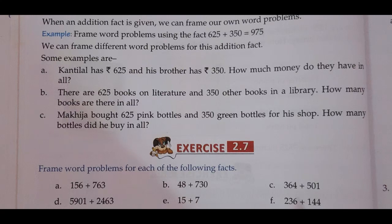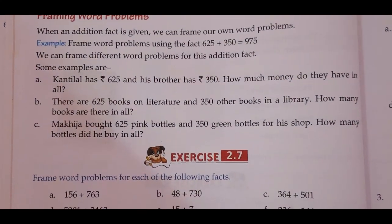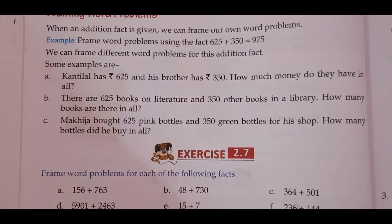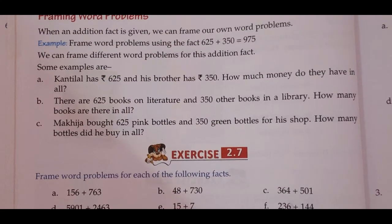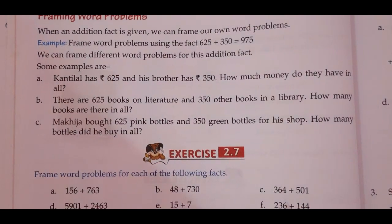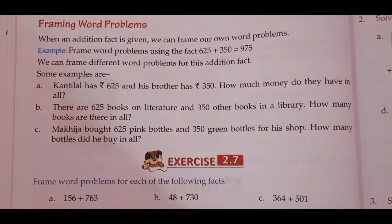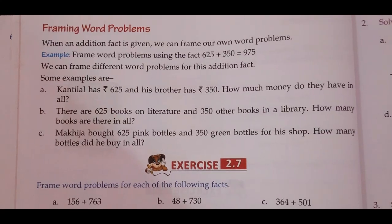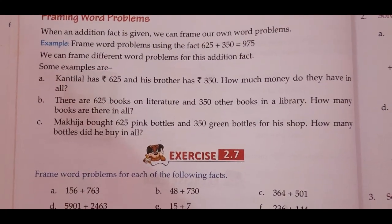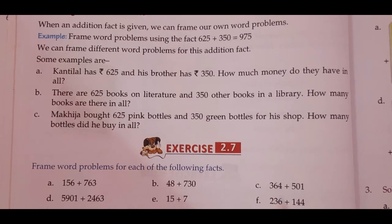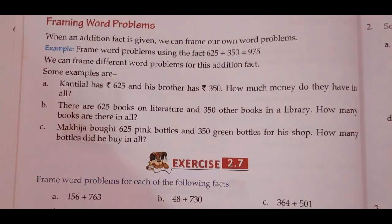The next example deals with objects instead of money. There are 625 books of literature and 350 other books in a library — how many books are there in all? The question framing here is more or less similar to the previous example.